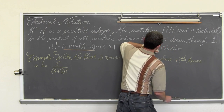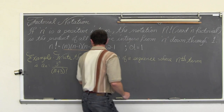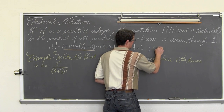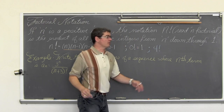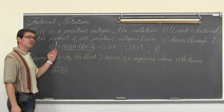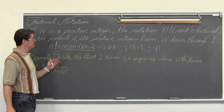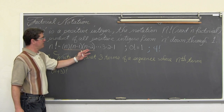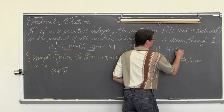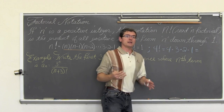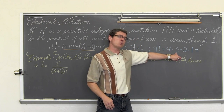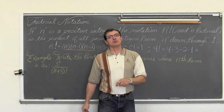As a simpler example, if I were to write four factorial, you have some value factorial — you start at that value and count back by one until you get to one. So four factorial would be equal to four times three times two times one. Four times three is twelve, and twelve times two is twenty-four.